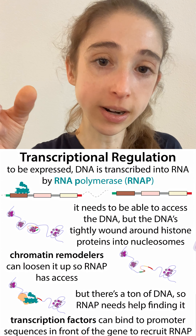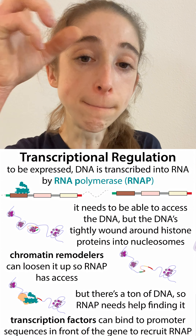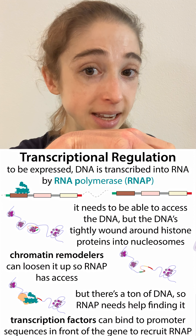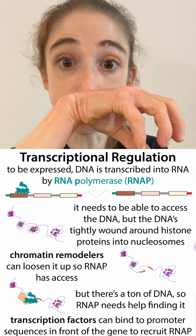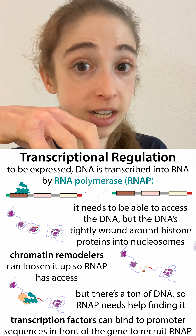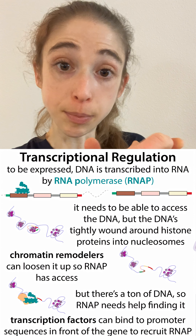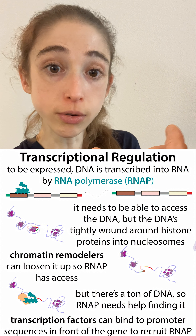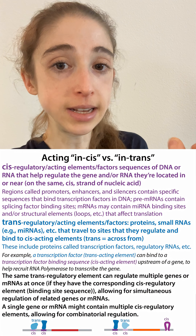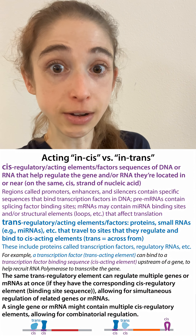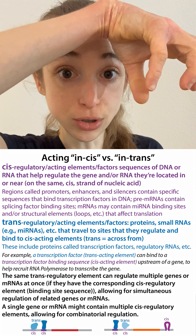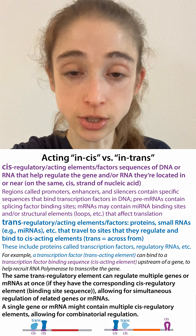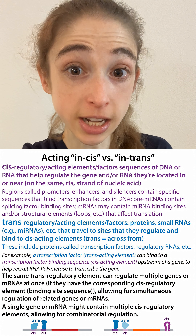They'd be trans regulatory elements binding to those regulatory sites, say in the region before a gene, like the promoter region, helping recruit RNA polymerase or bring in repressors that are actually going to shut down the production of messenger RNA from the gene.